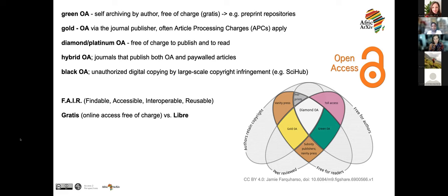What's sometimes referred to as black or unauthorized open access is, for example, Sci-Hub, where there's large-scale copying — often grounded on moral standards but factually illegal, because contracts exist that prevent it. The question is: what is a reasonable price to cover publishing costs? That's another discussion beyond the scope of today's session.